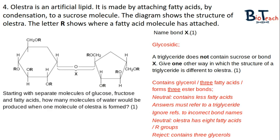This question asks you to state how many molecules of water would be produced when one molecule of olestra is formed. The R group shows where the fatty acids would be bonded to. The first thing I would do is count the number of locations where the R is. As I go around, I count eight locations of where the R is placed on this diagram. There is also the glycosidic bond that forms, and that would be the ninth location where a water molecule would be released. So the answer is nine.